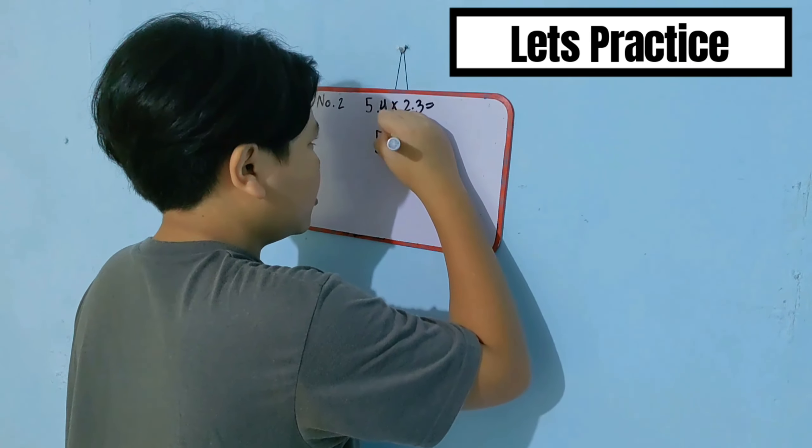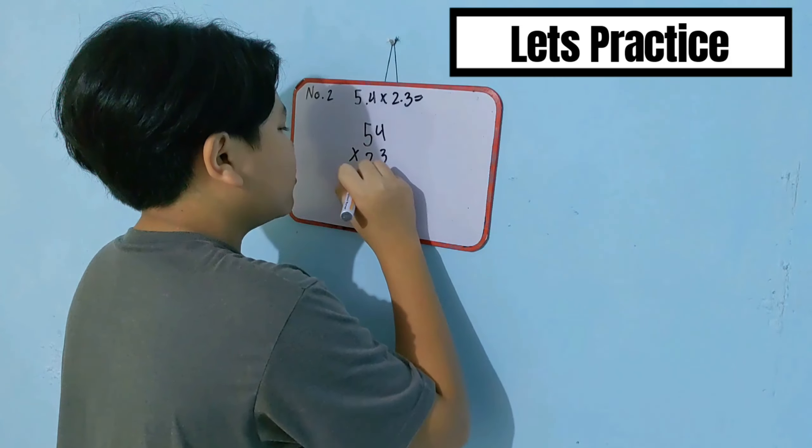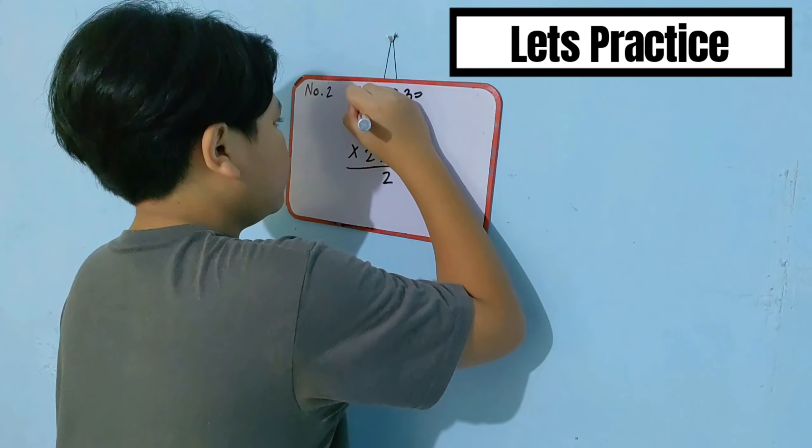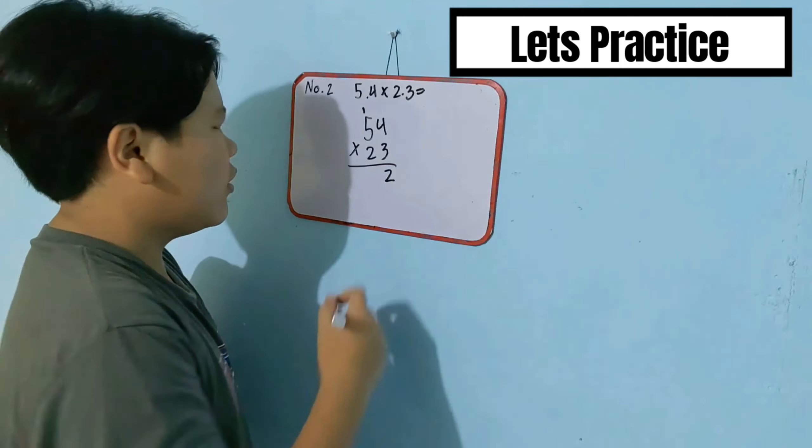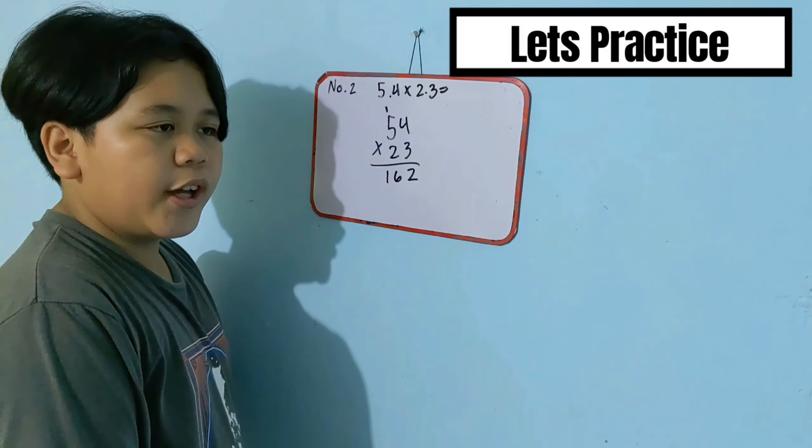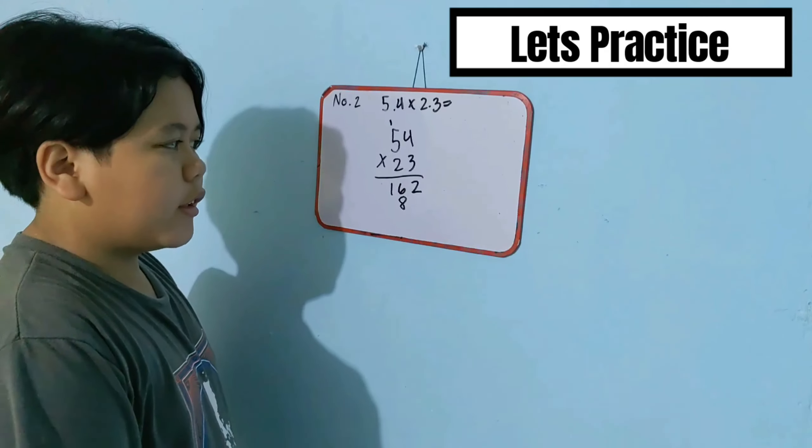54 times 23. 3 times 4 is equal to 12. 3 times 5 is equal to 15 plus 1. 2 times 4 is equal to 8. 2 times 5 is equal to 10.